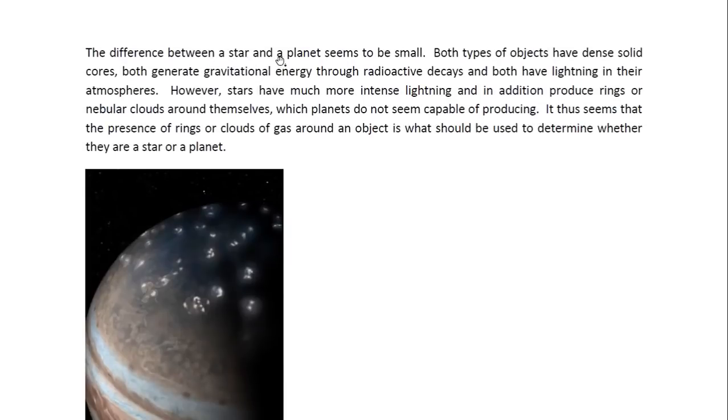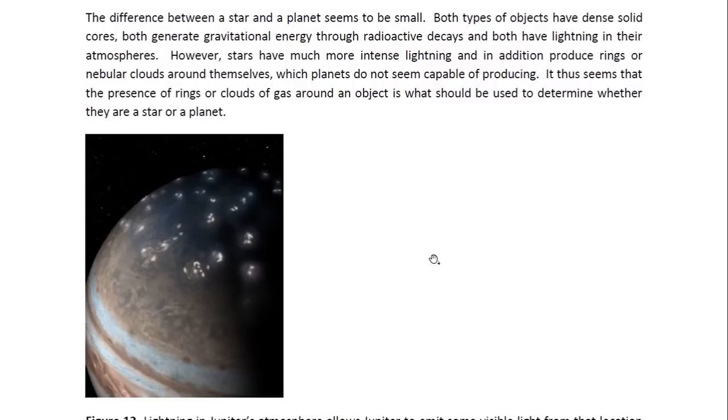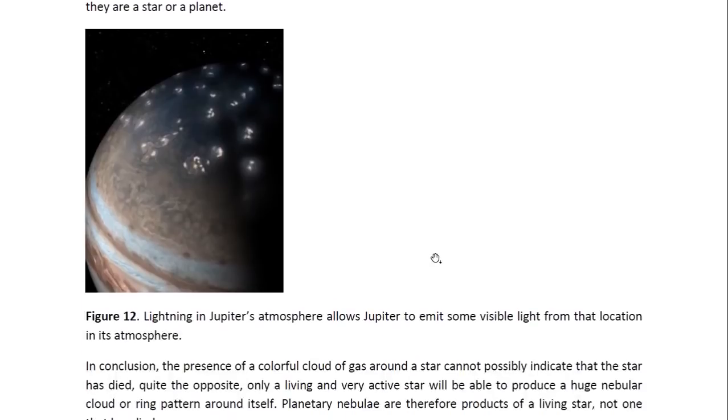The difference between a star and a planet seems to be small. Both types of objects have dense solid cores, both generate gravitational energy through radioactive decay, and both have lightning in their atmospheres. However, stars have much more intense lightning and in addition produce rings or nebula clouds around themselves, which planets do not seem capable of producing. It thus seems that the presence of rings or clouds of gas around an object is what should be used to determine whether they are a star or a planet.